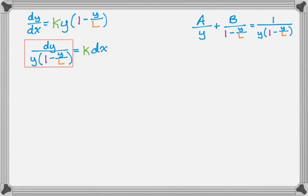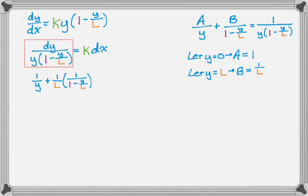Now I'm going to use the cover-up method to solve for A and B. If I let y equal 0, I go to the right-hand side, I cover up the 1 over y term, and I'm going to plug in 0 everywhere I see y, so it's 1 over 1 minus 0 over L, so 1 over 1, so I get that A is equal to 1. To solve for B, I'm going to let y equal L, because that's what would make that factor 0. I cover it up and I end up with B is equal to 1 over L. Now I'm going to rewrite the left-hand side using these values.